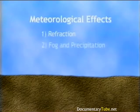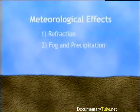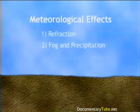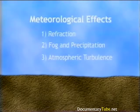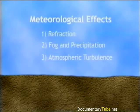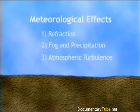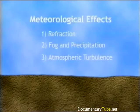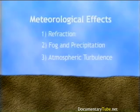Effects of fog and precipitation on sound propagation are generally negligible. On the other hand, atmospheric turbulence — generated by moving vehicles or heated pavement — could potentially cause fluctuations in received sound levels or can reduce soft ground attenuation.